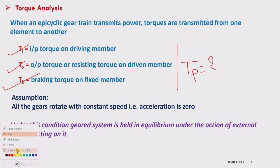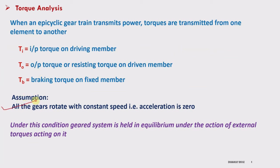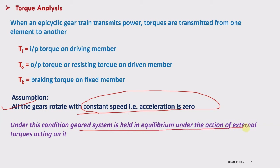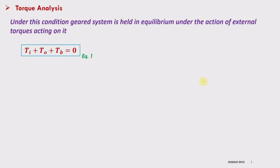First assumption: assume that all the gears rotate with constant speed, so the system is under zero acceleration. Under this condition, the gear system will be held in equilibrium under the action of external torques acting on it. So we get the first equation: Ti + To + Tb = 0.